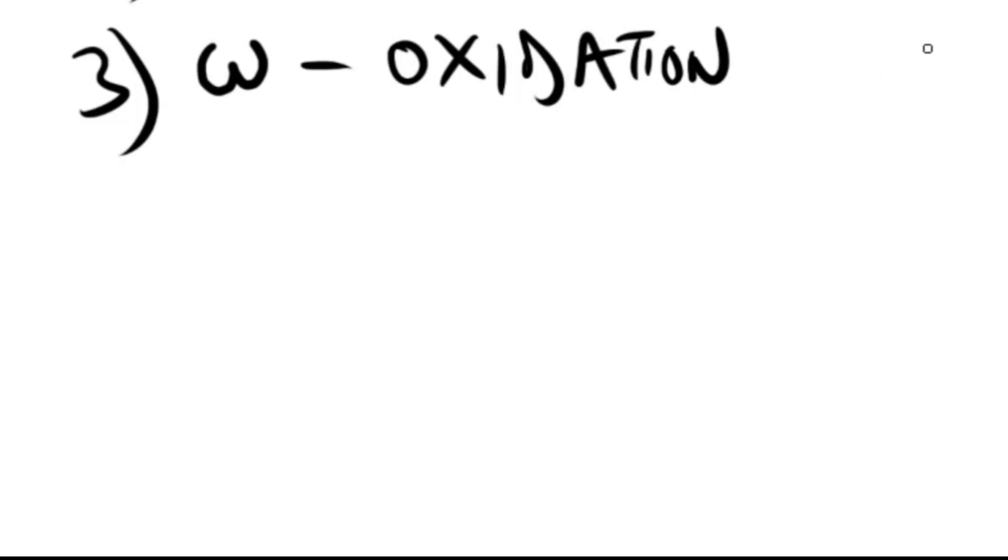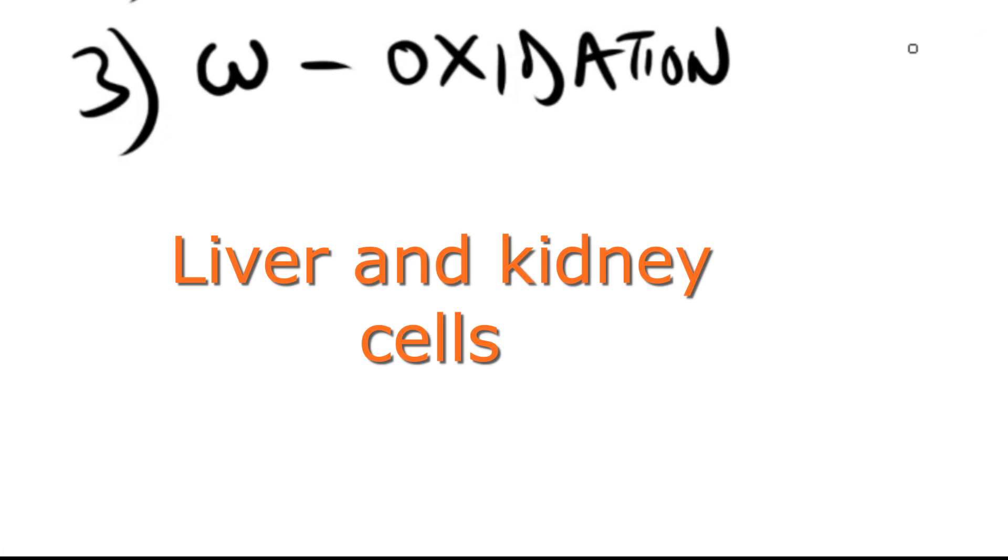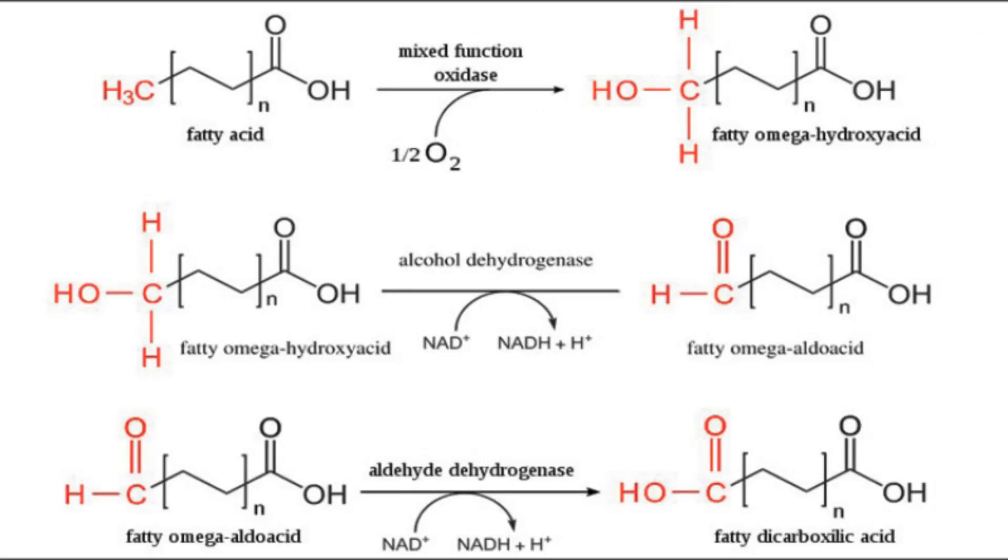The third type is omega oxidation, which is an alternative pathway to beta. It involves the oxidation of the omega carbon, the carbon most distant from the carboxyl group of the fatty acid. It's a minor catabolic pathway for medium chain fatty acids and is located in the smooth endoplasmic reticulum of the liver and kidney cells.